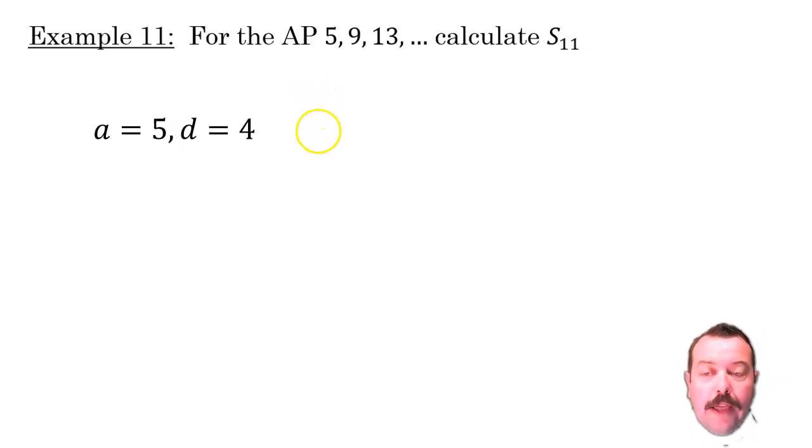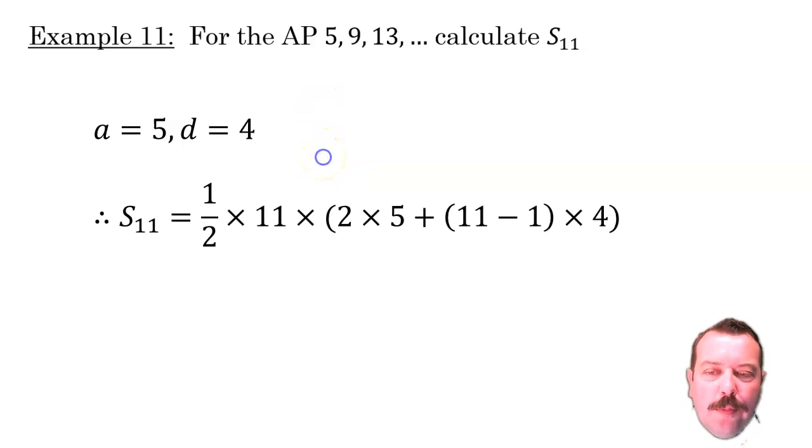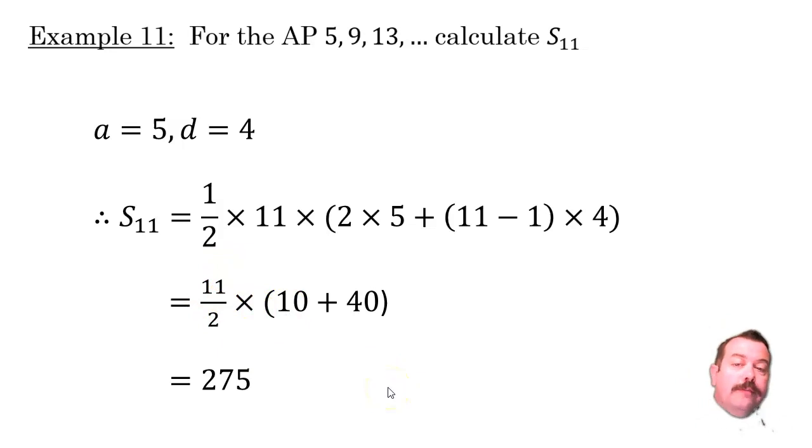So, given I have the first term and the common difference, I'm going to use the first of those formulas. So half of n, n is going to be 11. Half of n times 2a, two lots of 5, plus n minus 1, or 11 minus 1, times the common difference of 4. That gives me 11 over 2 times 10 plus 40 gives me 275. So that's the sum of the first 11 terms.